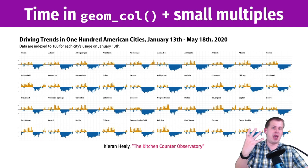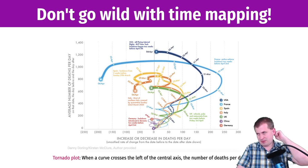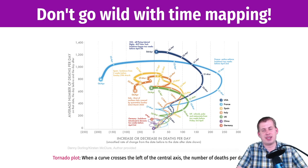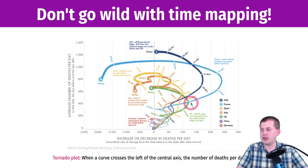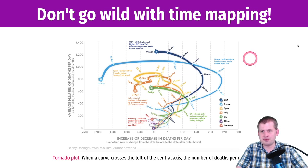One thing to keep in mind: while you can map time onto whatever aesthetic you want, don't go too crazy, because you can get really confusing charts. This is called a tornado plot. It was made during the pandemic to show how fast the pandemic was spreading in different countries. Time is no longer on the x or y axis, and it's not mapped by color — each colored line is a different country. Time is mapped by following the lines. So if you look at the blue line — that's France — here's the change in deaths per day and their average deaths per day for March 30, March 31, April 1, April 2, April 3, and April 4. The progression of time spirals around, and it's really hard to interpret.